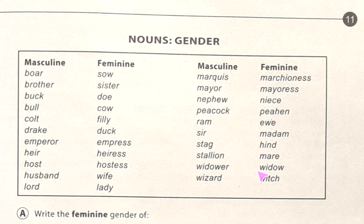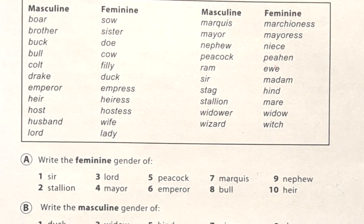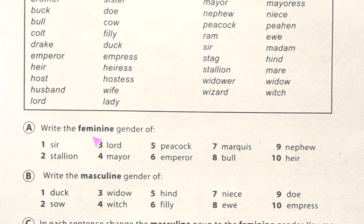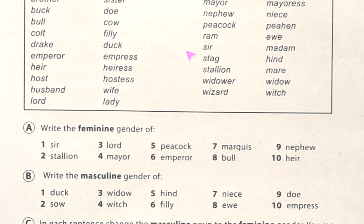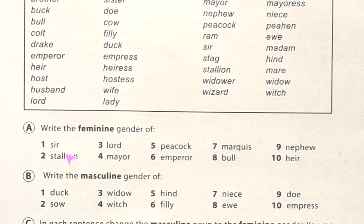Stallion/mare, widower/widow, wizard/witch. After this there are some easy exercises. I'm helping you, but first try to do it by yourself. Write the feminine gender — try not to look at the list. You have to memorize these things and keep them in memory. Do the exercises yourself, then match with mine. First one: sir — its feminine is madam.